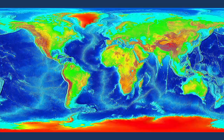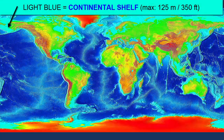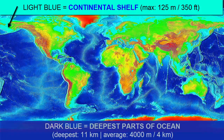Now let's review the depths and heights of oceans and land. In this image, the light blue color represents the shallow margins or continental shelves of the continents and ocean islands, never deeper than 125 meters or about 350 feet. The darker blue represents the deeper parts of the ocean — the deep abyssal plains, trenches, and mid-ocean ridges. These depths are, on average, 4,000 meters or 4 kilometers.